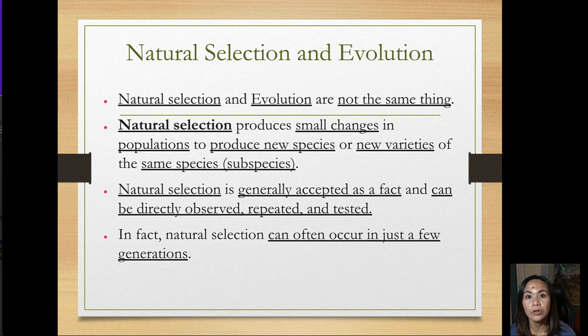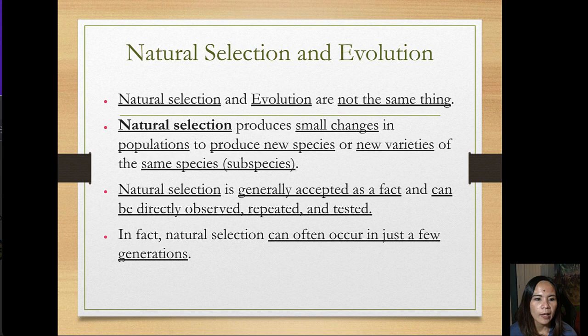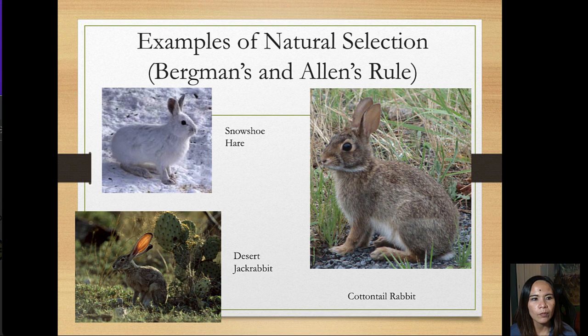Natural selection and evolution are not the same thing. Natural selection produces small changes in populations to produce new species or varieties — kind of like subspecies. Natural selection is generally accepted as a fact and can be directly observed, repeated, and tested, and can often occur in just a few generations.